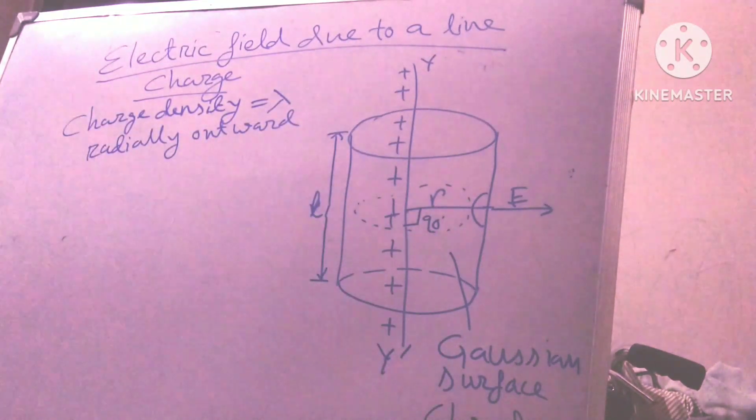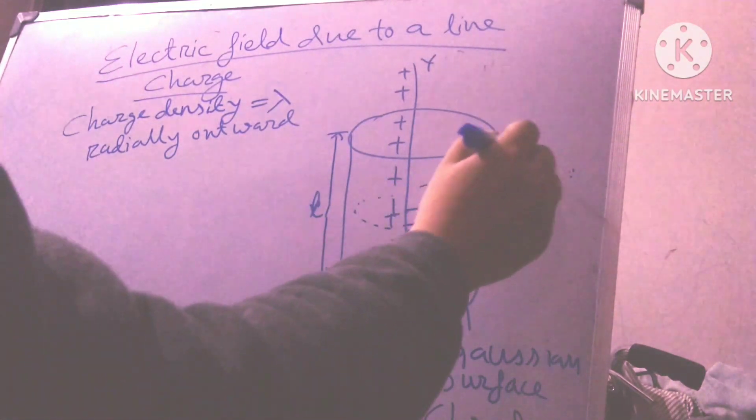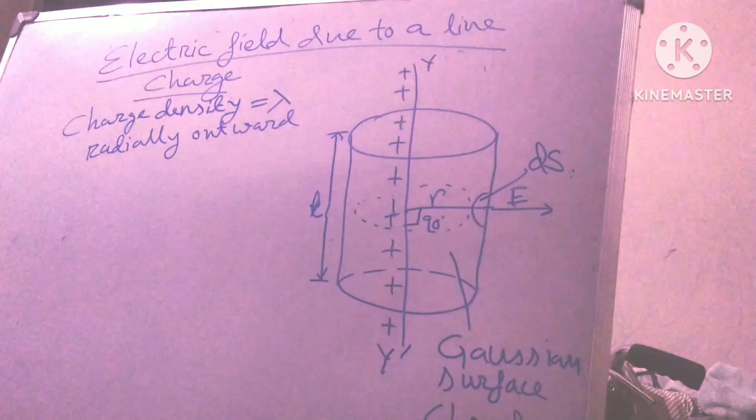Let us now calculate the electric flux that crosses the Gaussian surface from the charge enclosed by the Gaussian surface. Since electric lines of force are parallel to end faces of the cylinder, there is no component of field along the normal to the end faces. So the electric flux crosses only through the curved surface of the cylinder. This surface is called ds.